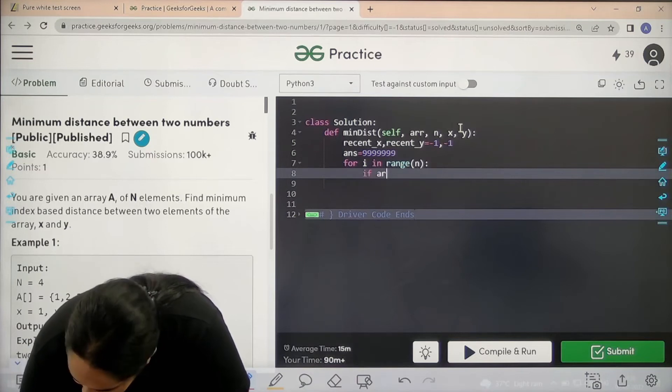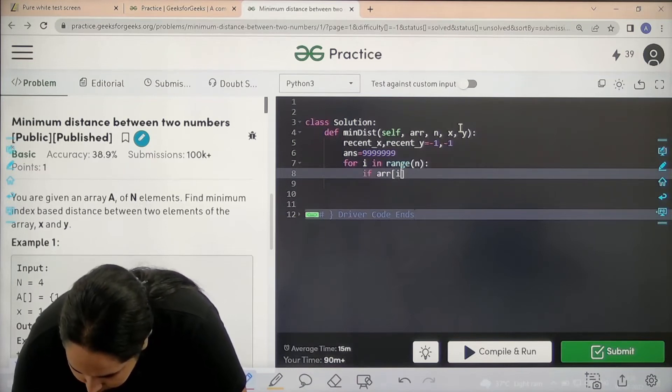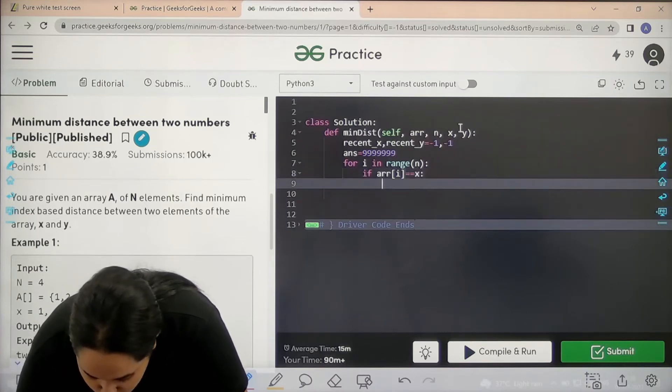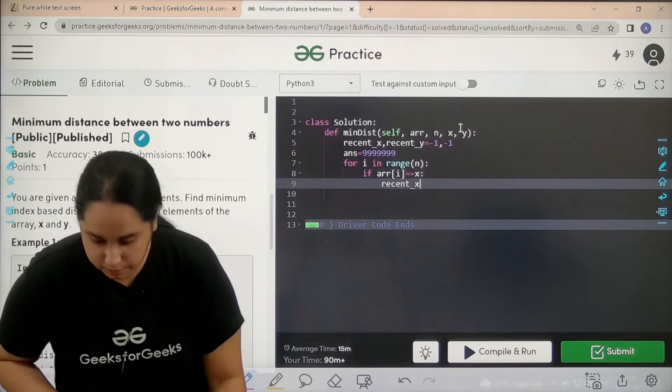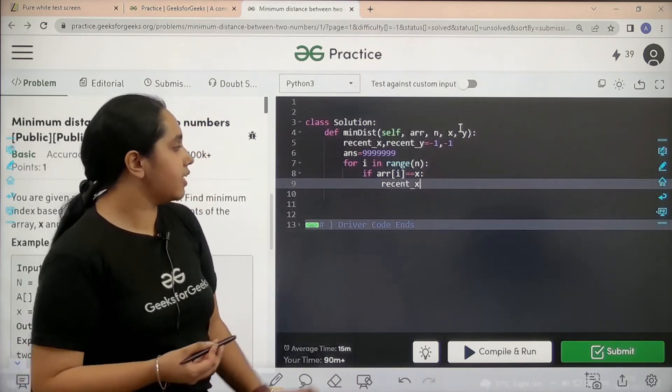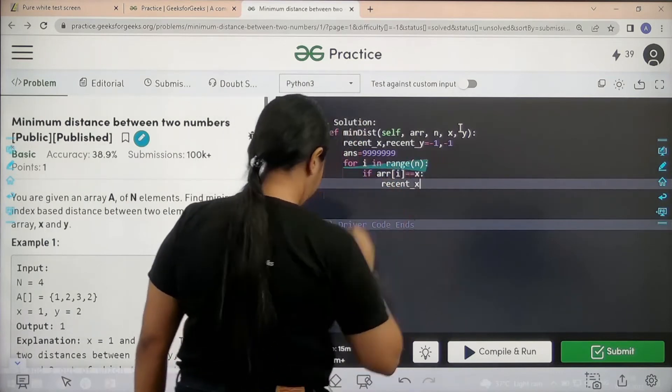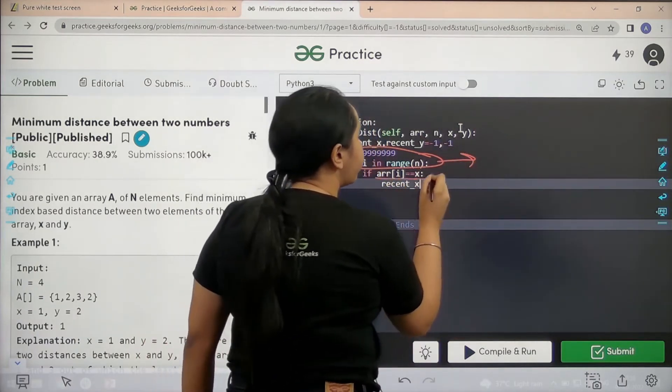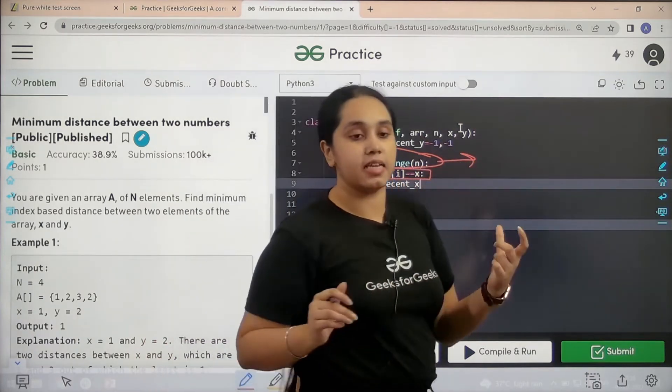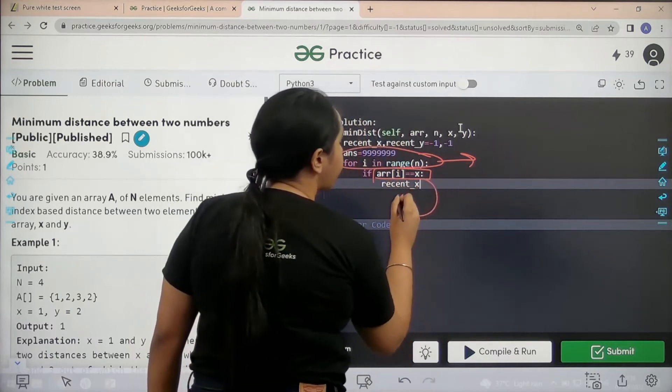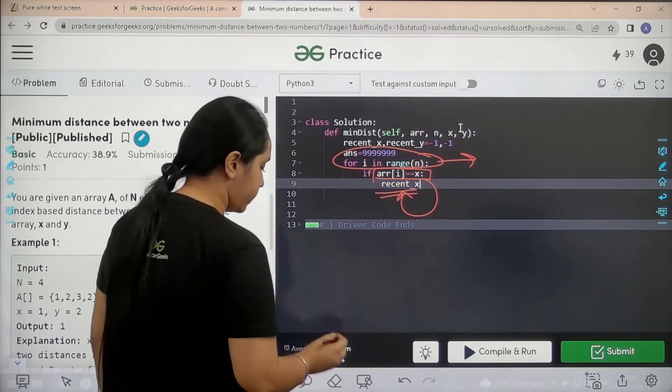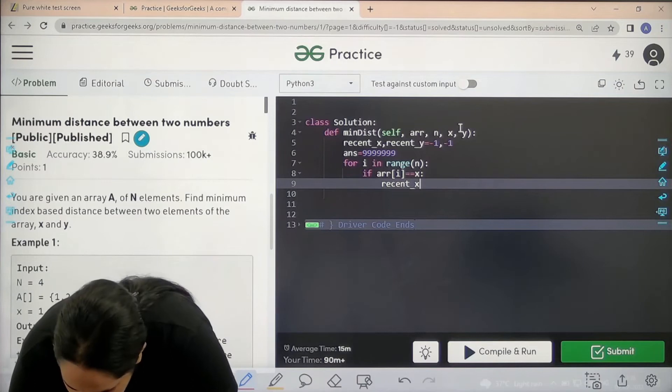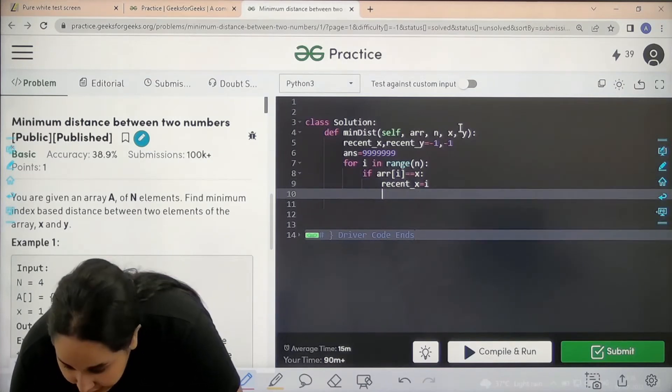If array[i] equals x, if we find x, then I need to assign that position to recent_x. See, I have applied the loop on the array. If I find anywhere the x element that I need to search, that position of that x element should be stored in recent_x. Recent_x equals i.